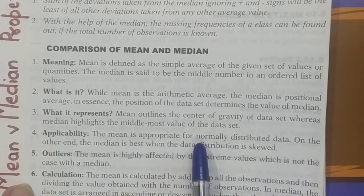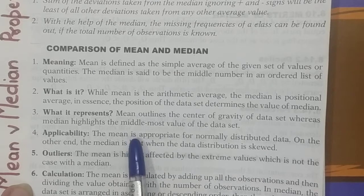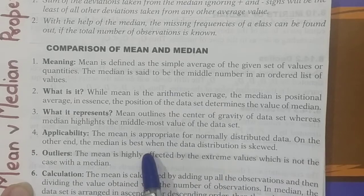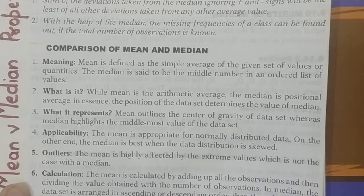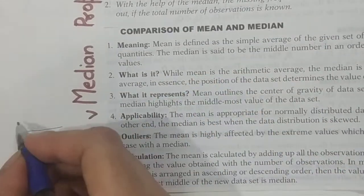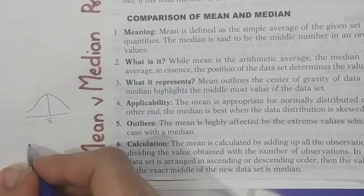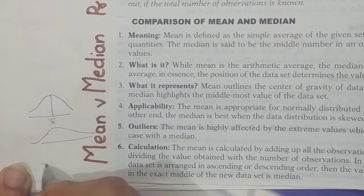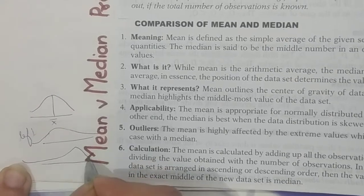Applicability: mean is appropriate for normally distributed data with a normal distribution curve, where the mean sits at the center. Median is more appropriate when the distribution is skewed — either towards the left or towards the right — because the middle value is a better representative in such cases.